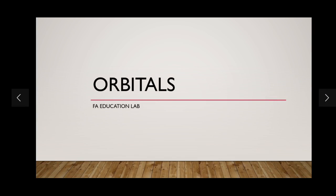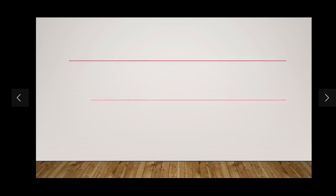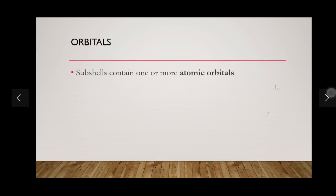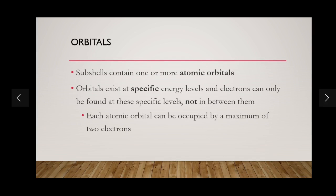So, orbitals. We discussed that principal quantum shells are split up into subshells. We should also know that these subshells can be further split up into things which are called atomic orbitals, and these subshells can contain one or more atomic orbitals. There are four subshells required for your AS level: the s, p, d, and f subshells.